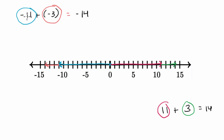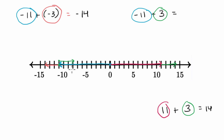Now let's look at the scenarios where we had mixed signs. Let's say we have negative 11 plus three — what do we think that is going to be equal to? We already have drawn negative 11 right over there. And now we want to think about plus three, so we're going to start right over here. We're going to go three to the right from that point: one, two, three. Where do we end up? This right over here is negative eight. So we are now at negative eight.